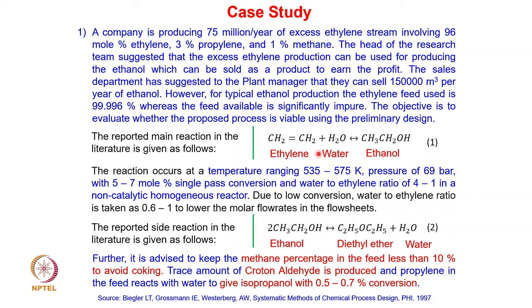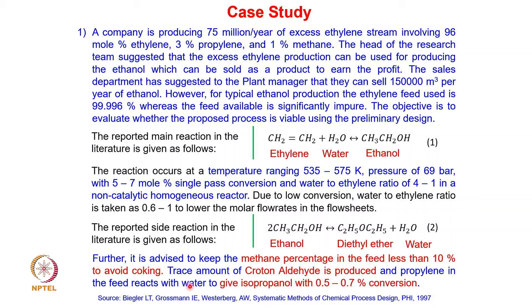There is also a side reaction where ethanol reacts with another ethanol molecule to produce diethyl ether plus water as a byproduct. Literature advises that the methane percentage in the feed should be less than 10 percent to avoid coking, since at 535 to 575 Kelvin methane gets converted to hydrogen and carbon. Trace amounts of croton aldehyde are also produced, and propylene in the feed reacts with water to produce isopropanol with 0.5 to 0.7 percent conversion.